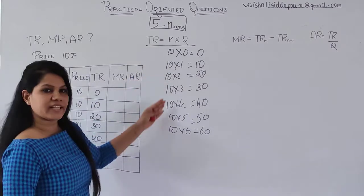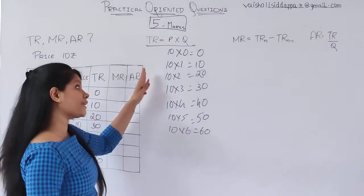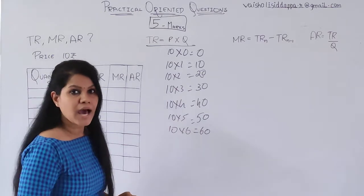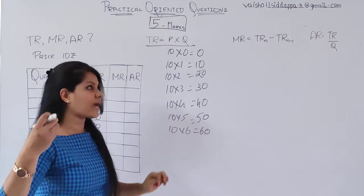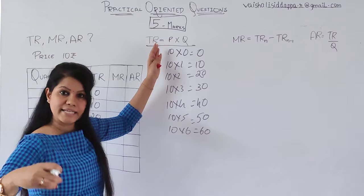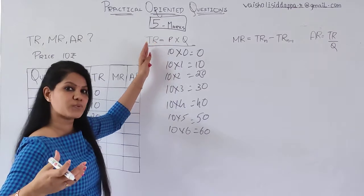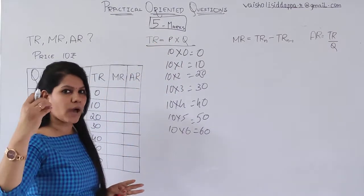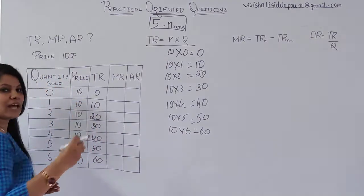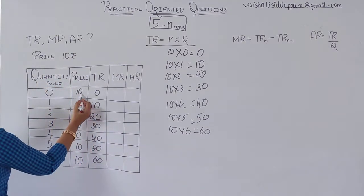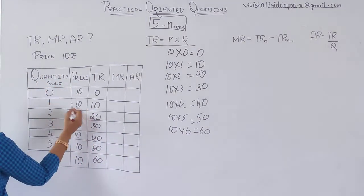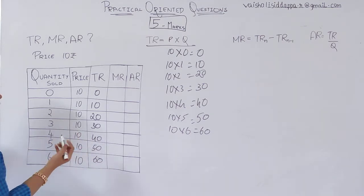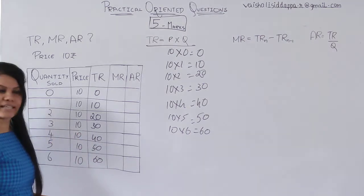Instead of computing each one individually with the formula, you can find it out easily. I am helping you out — you can compute this with the help of this formula. Just remember these formulas to find out. Easy ways: 10 zeros are 0, 10 ones are 10, 10 twos are 20, 10 threes are 30, 10 fours are 40, 10 fives are 50, and 10 sixes are 60.